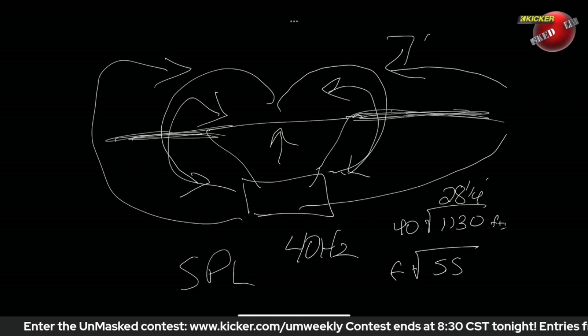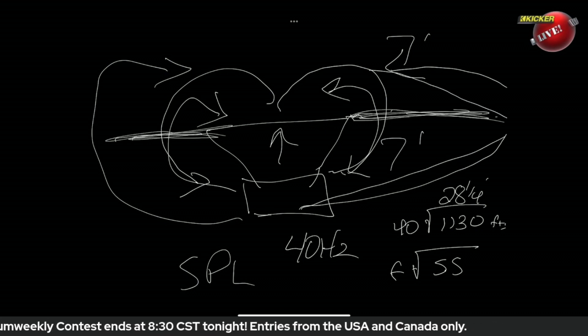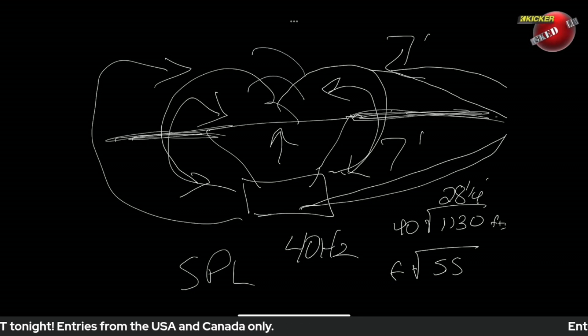Because that'll give you seven feet for the sound to travel this way, seven feet to travel this way - that's going to put it back in phase with the front wave. So literally, to get 40 hertz on an infinite baffle, if it was just a board in the middle of nowhere, you would have to be basically seven feet square.